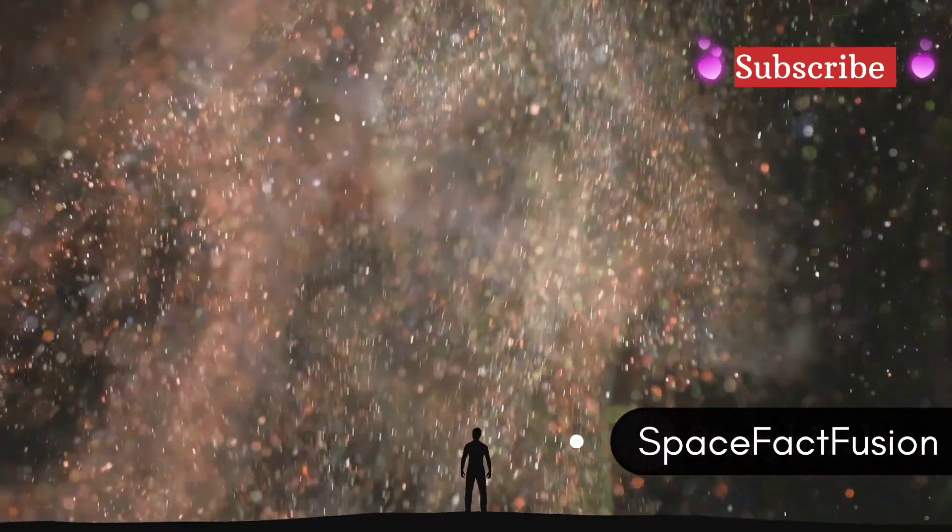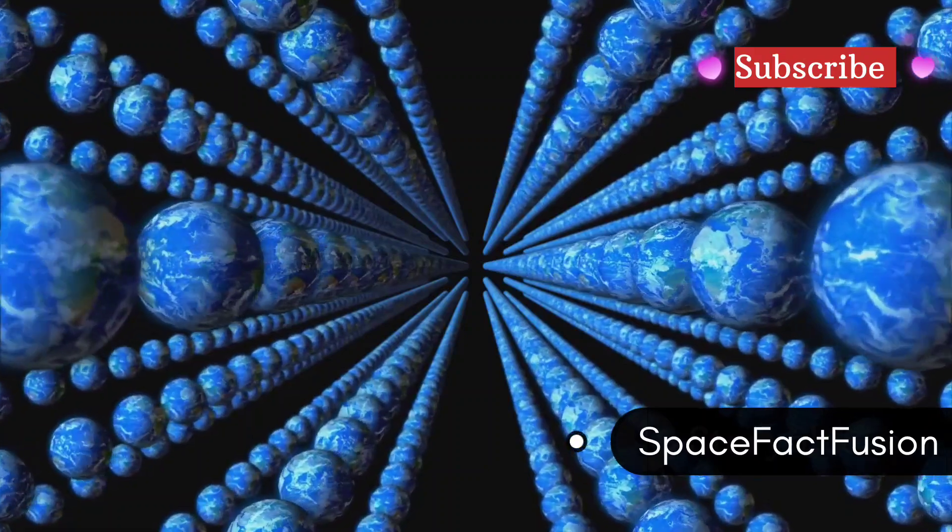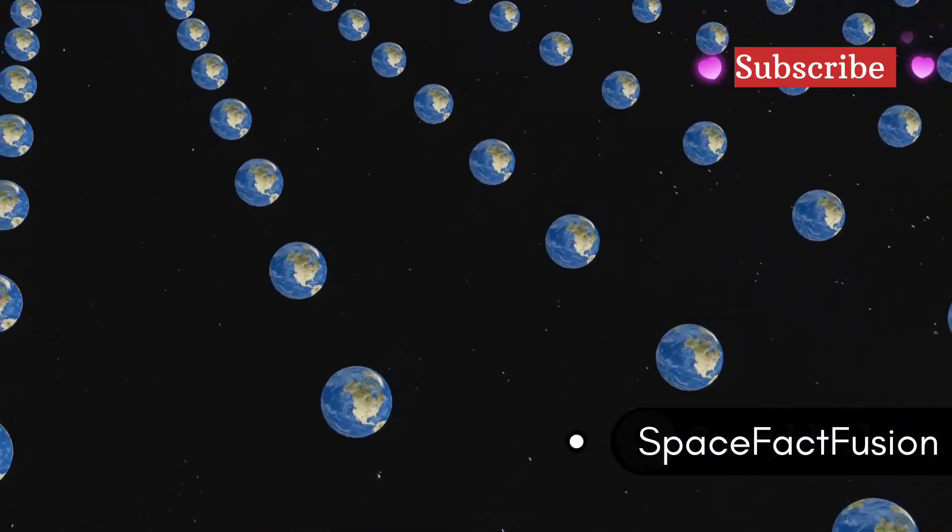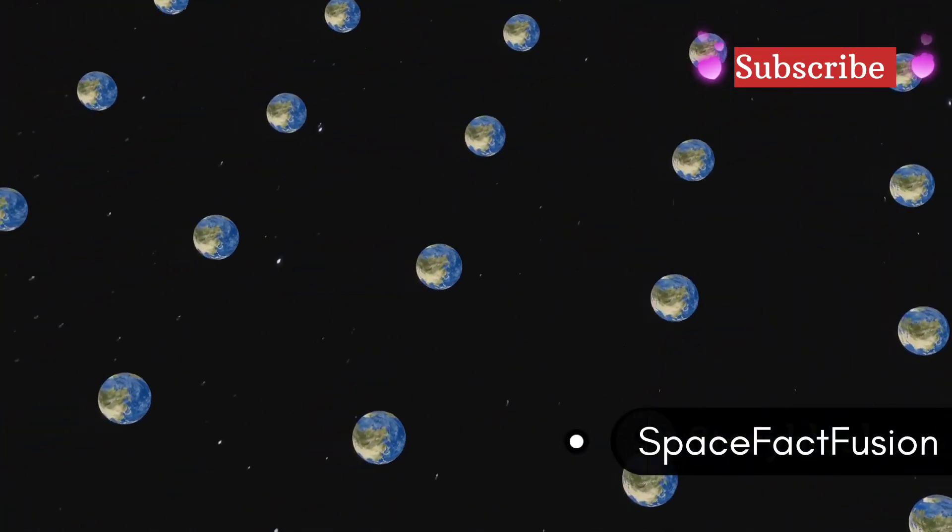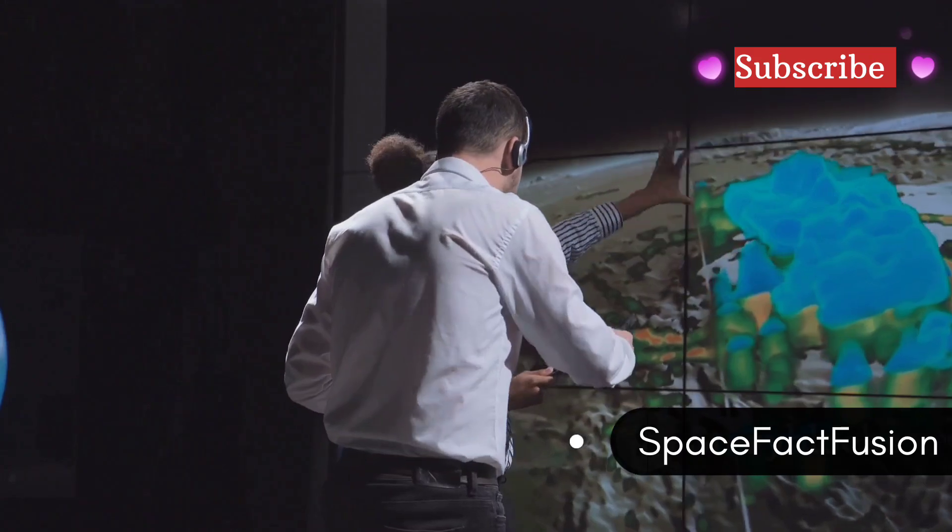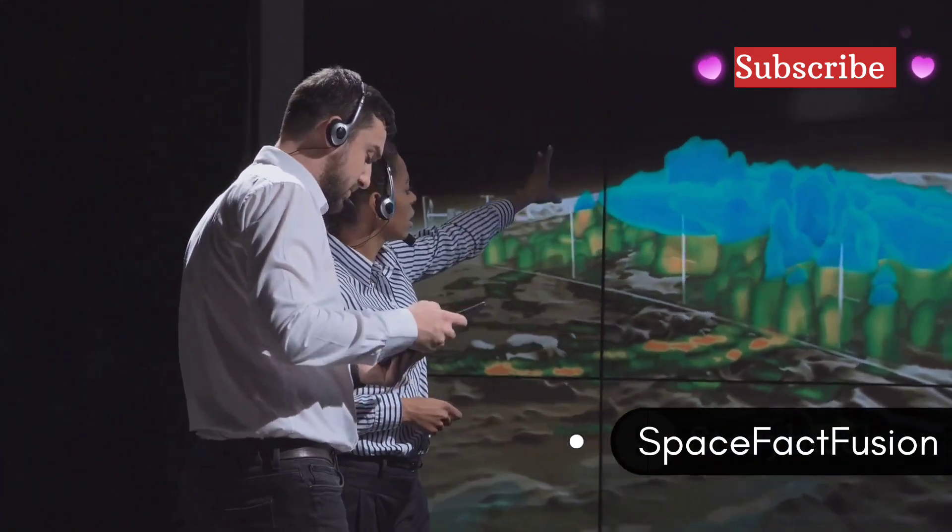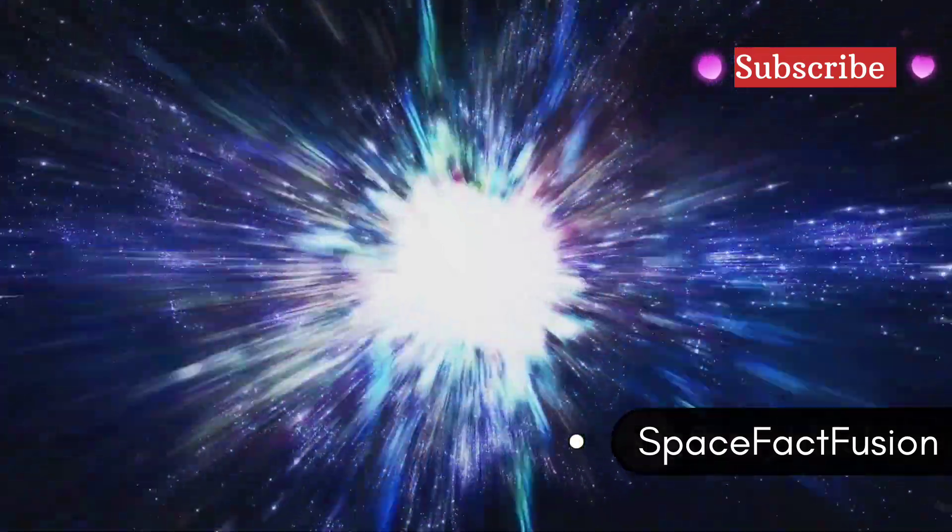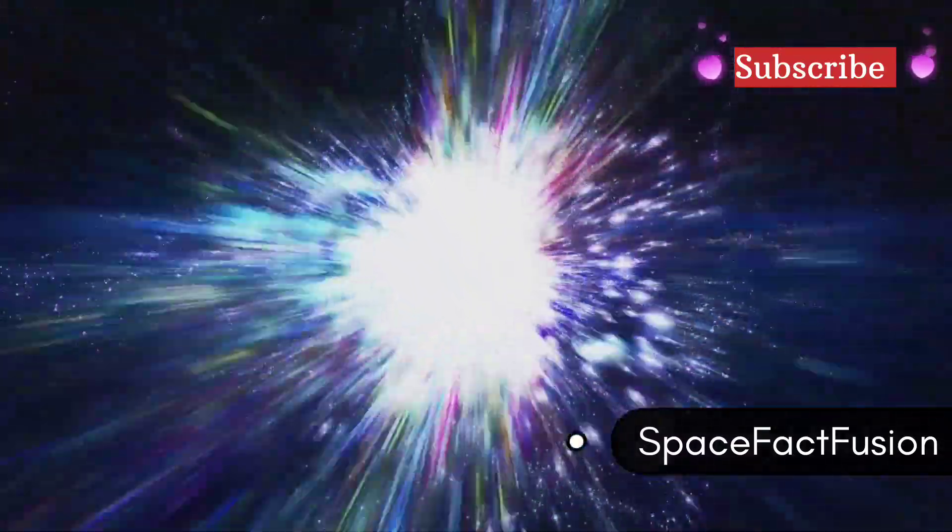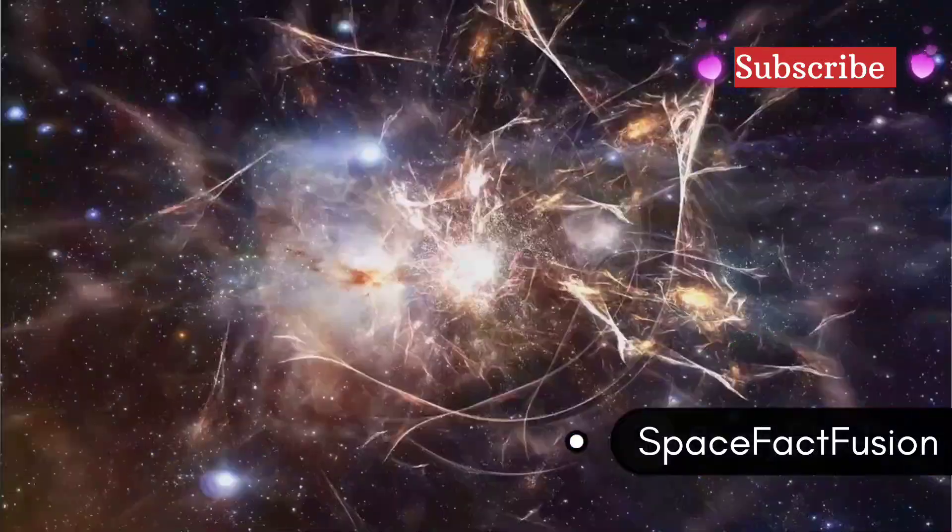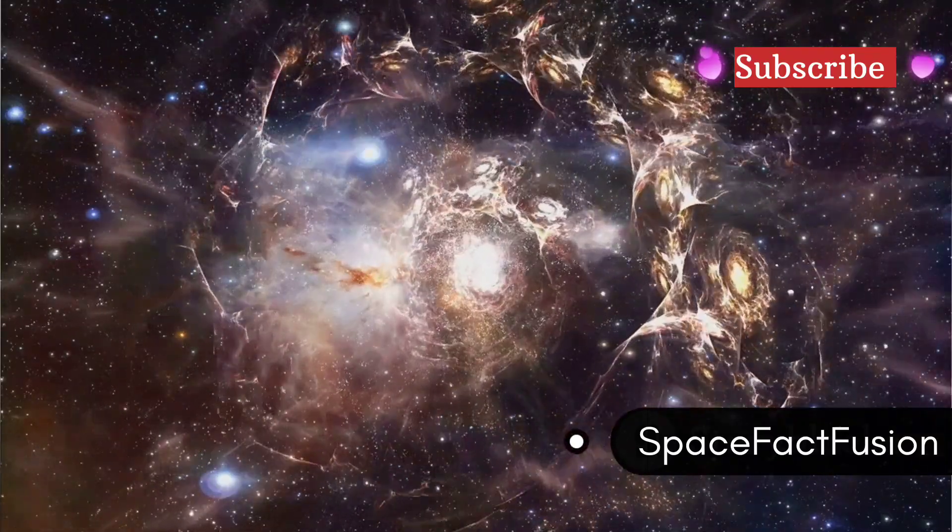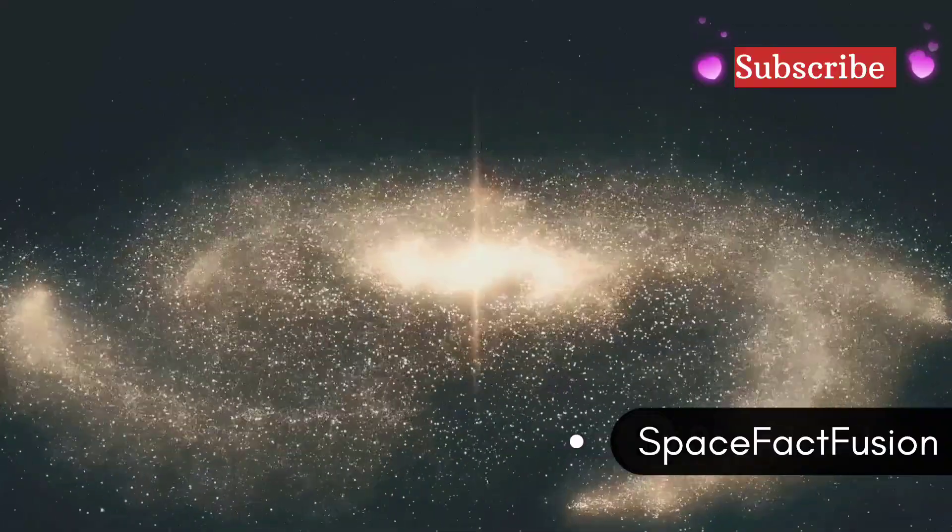The multiverse, as captivating as it is, remains firmly in the realm of theoretical physics. However, some scientists believe that we might be able to find observational evidence for its existence. They argue that the clues might be hidden in the vast expanse of the cosmos, waiting to be discovered. One potential avenue lies in the study of the cosmic microwave background, the faint afterglow of the Big Bang. This ancient light carries with it the secrets of the universe's infancy. The CMB is a treasure trove of information, and some researchers believe it might hold subtle clues about the existence of other universes.